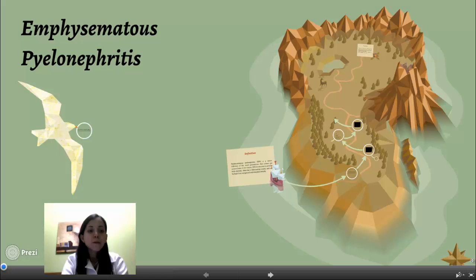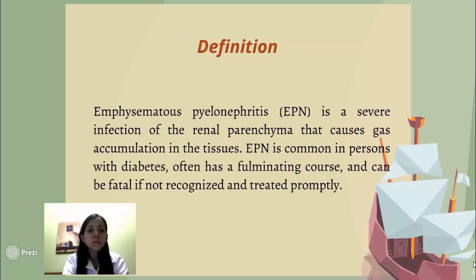Emphysematous Pyelonephritis. Definition: Emphysematous Pyelonephritis, EPN, is a severe infection of the renal parenchyma that causes gas accumulation in the tissues.